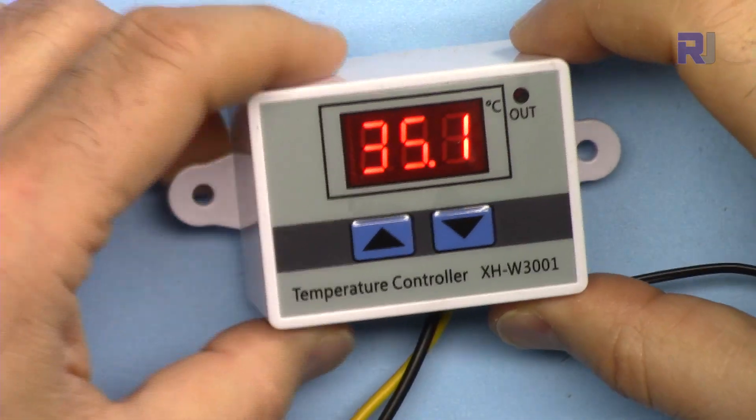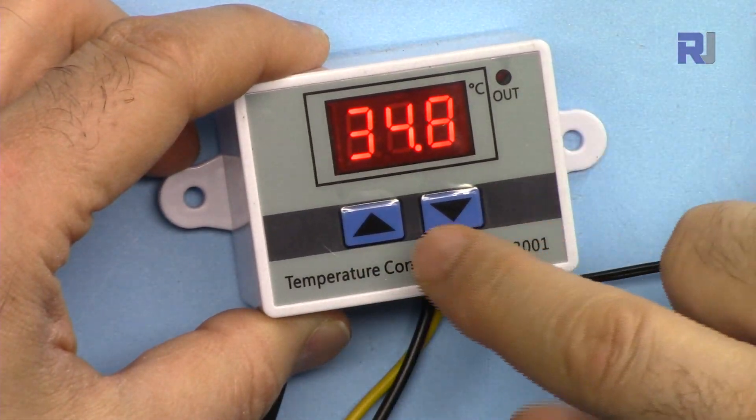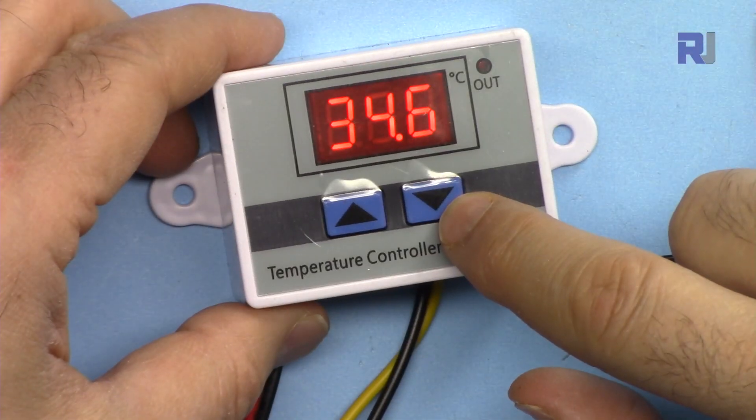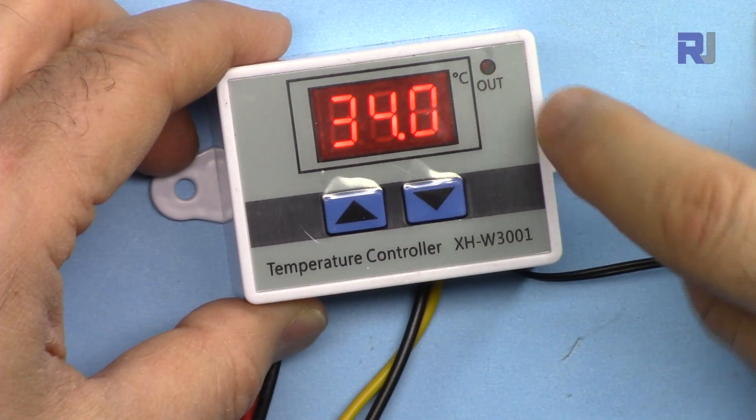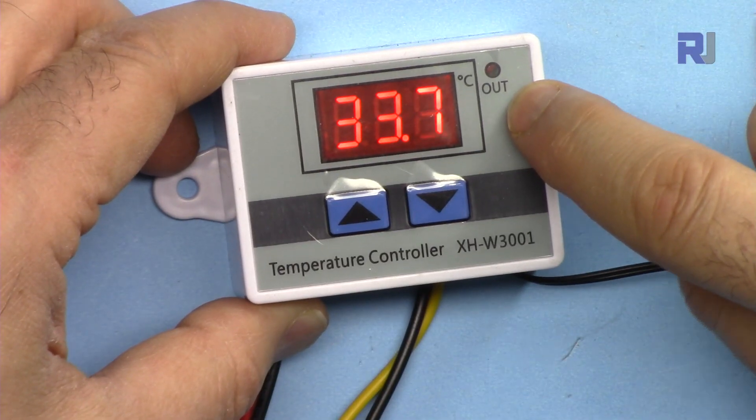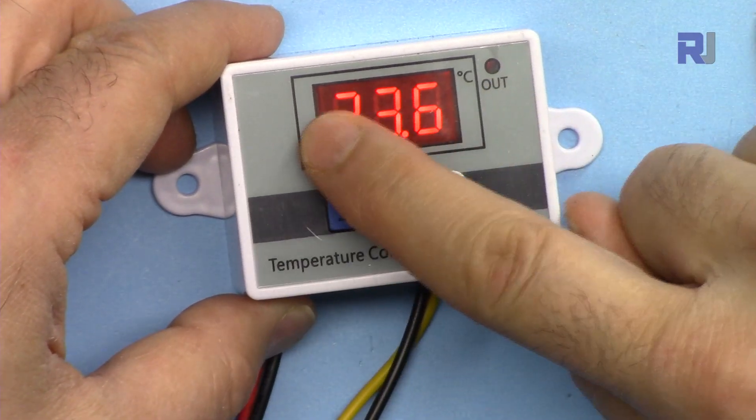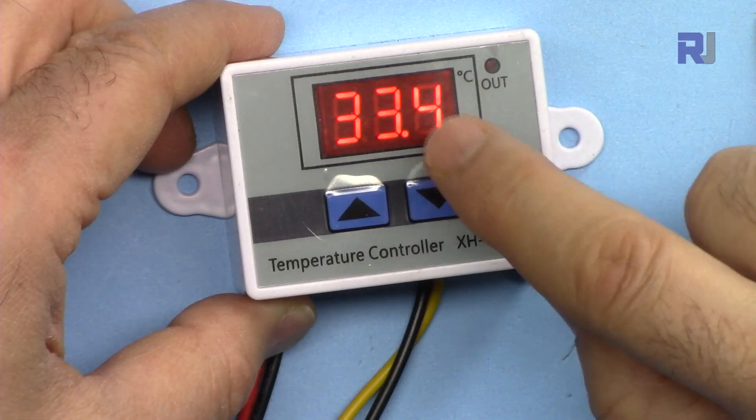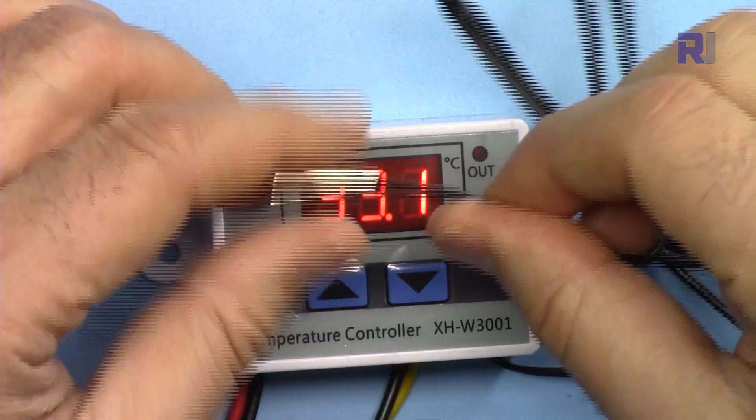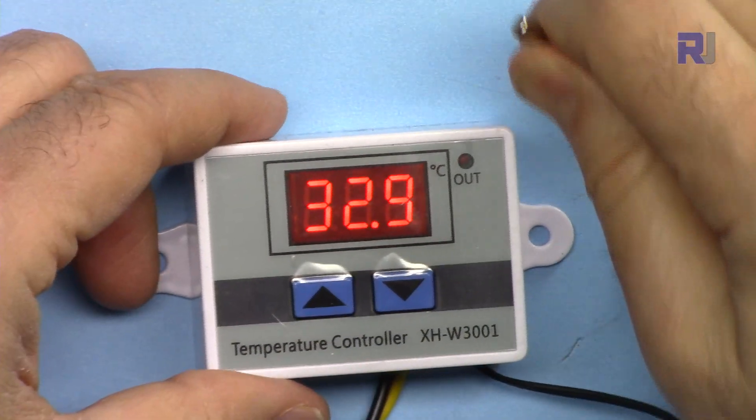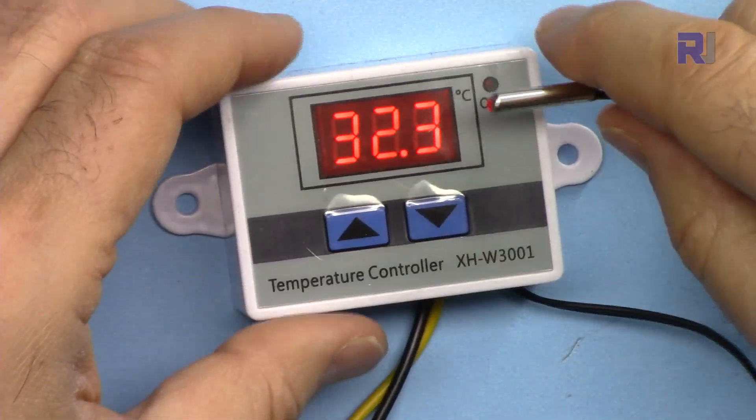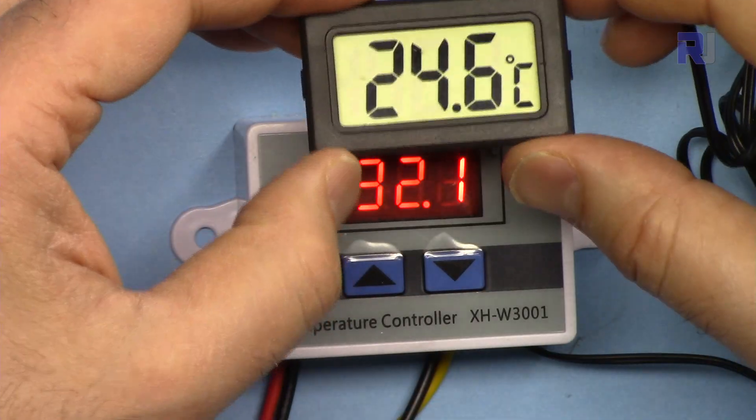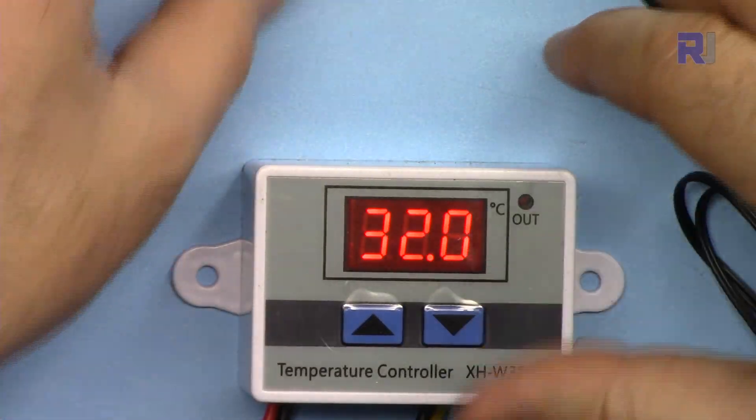Now let me explain the module. The module is very simple - it has two push buttons, arrow up and down, and there is an LED that when the output is turned on it will turn on. The value you see here continuously shows the current temperature that is attached to this or room temperature. I applied some heat here, that's why the temperature has increased. Actual room temperature is now 24 degrees at the moment, so it is slowly decreasing.